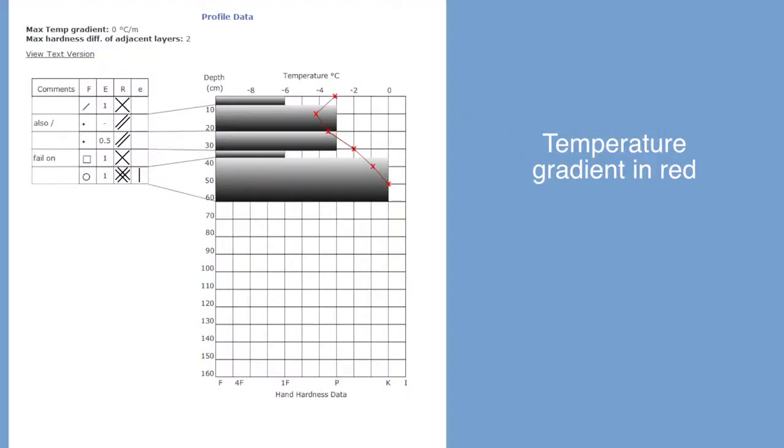So it'll give an indication of whether the snowpack is going to improve, become stable, more stable, or whether it's going to get weaker or remain weak. And the temperature line which you get in the graph is the most relevant piece of information you can get in the snow profile.